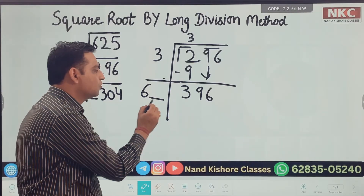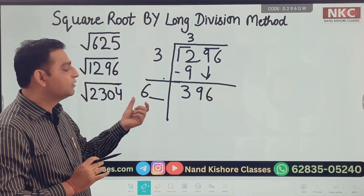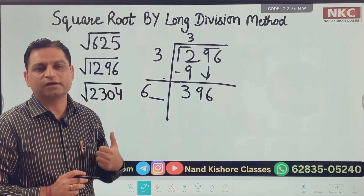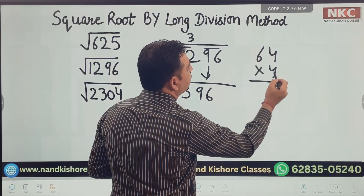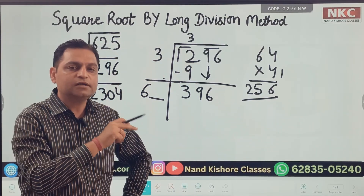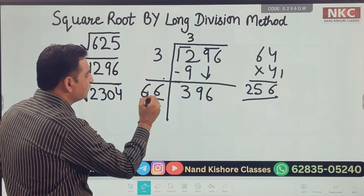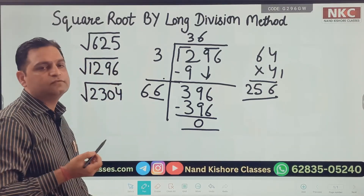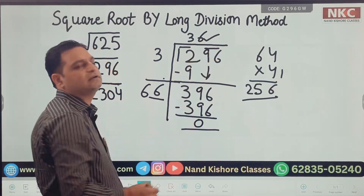Now, what should I write along with 6 so that the multiplication becomes proper? It can be 1, 2, 3, or 4. Like 64 multiplied by 4 — because I know that 4 times 4 gives 16 at the end. Let me try it. 4 times 4 is 16, but that gives 256, so it is not applicable. Then, other than 4, the next value I can try is 6. That means 66 multiplied by 6 gives 396, and the remainder will be 0. So the square root of 1296 is 36.